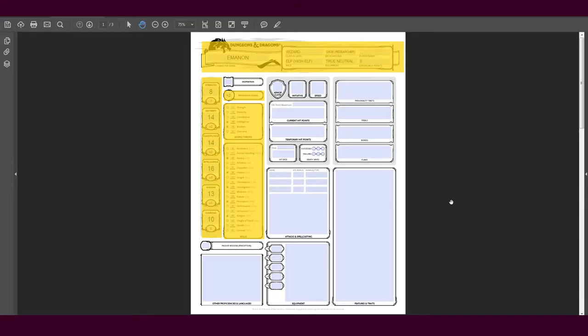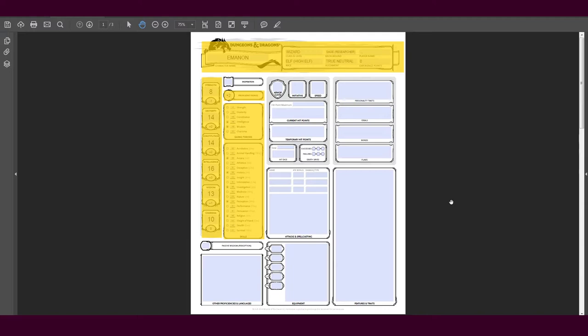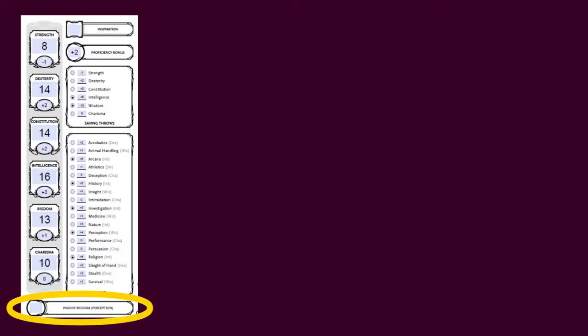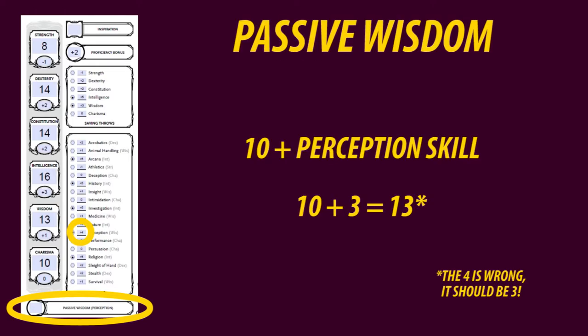The saving throw proficiencies my wizard class provides are intelligence and wisdom — perfect for who I want my character to be. The next thing to do is add the proficiency bonus to the saving throws and skills we just decided. And there we have it! Now we can take a look at our character's passive wisdom. You calculate it by adding the number on your perception skill to 10 — so my character has a passive wisdom of 10 + 4, which is 14.